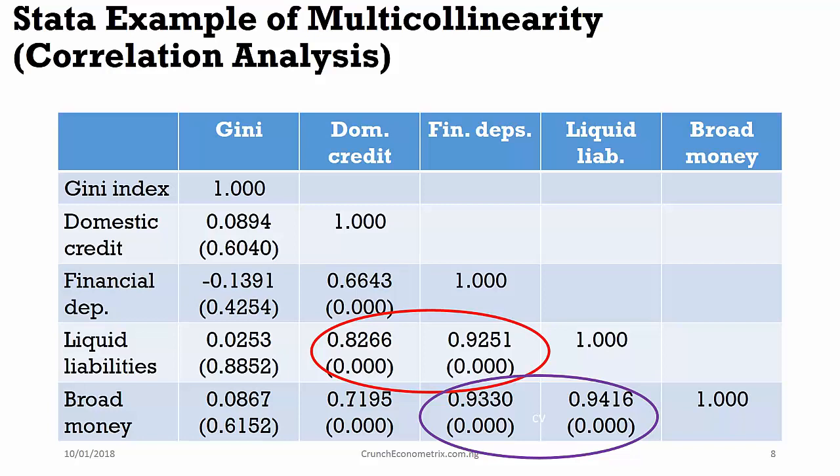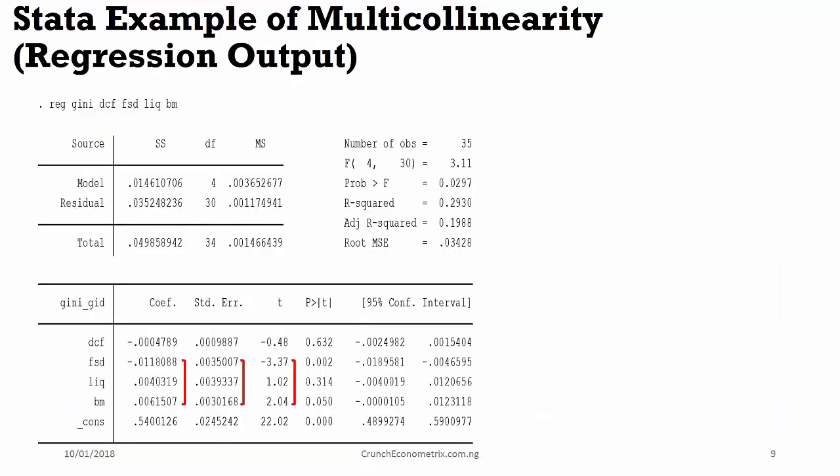Now, let's look at the regression output and see whether this model suffers from multicollinearity. First, let's take a look at the regression beta coefficients. You will observe that the beta coefficients of those variables suffering from multicollinearity, the beta coefficients are larger than that of domestic credit that does not really suffer from multicollinearity.